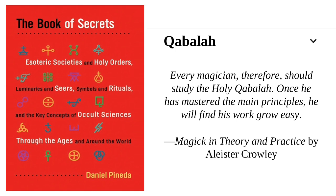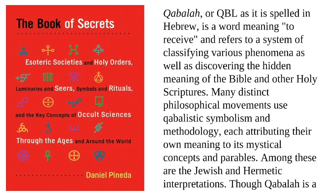Magic in Theory and Practice by Alistair Crowley. Kabbalah, or QBL as it is spelled in Hebrew, is a word meaning to receive, and refers to a system of classifying various phenomena, as well as discovering the hidden meaning of the Bible and other holy scriptures. Many distinct philosophical movements use Kabbalistic symbolism and methodology, each attributing their own meaning to its mystical concepts and parables.